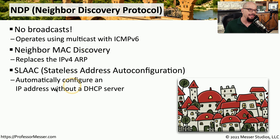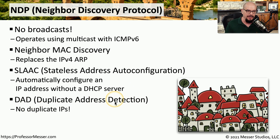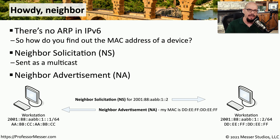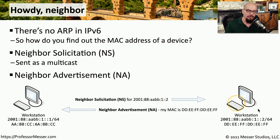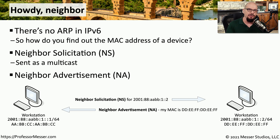NDP can also be used in conjunction with SLAAC — Stateless Address Auto Configuration — which allows a system to automatically configure itself with an IP address without using a DHCP server. Neighbor Discovery Protocol is also used to identify duplicate addresses using DAD, or Duplicate Address Detection. In IPv6, instead of ARP, we send a Neighbor Solicitation (NS) on a multicast address, and the response comes back as a Neighbor Advertisement (NA) which includes the MAC address of the local device. Although the protocols are slightly different, the process is very similar to IPv4.